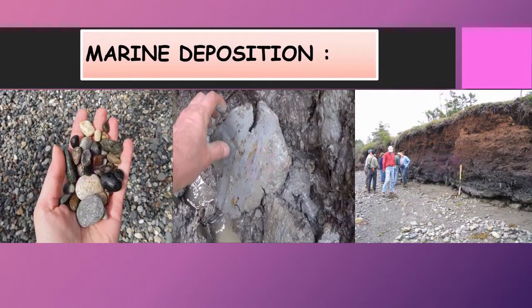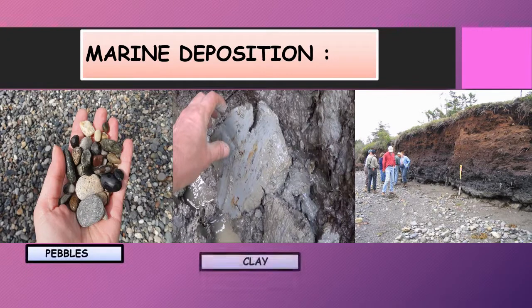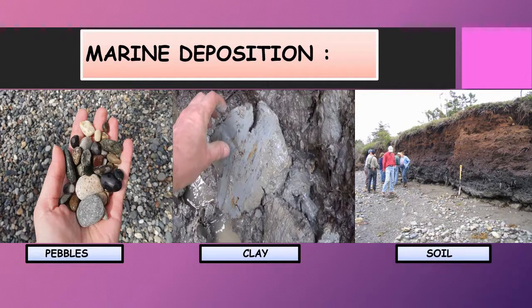Marine deposition: the marine beds are the deep parts of the world in their respective regions, so various deposits are found there. Deposits include pebbles, clay, and soil brought by rivers and glaciers from the continents. The deposition occurs mainly on the continental shelf. These are called marine deposits.